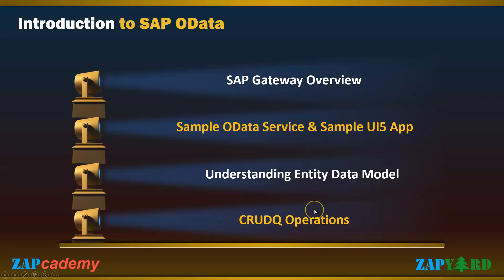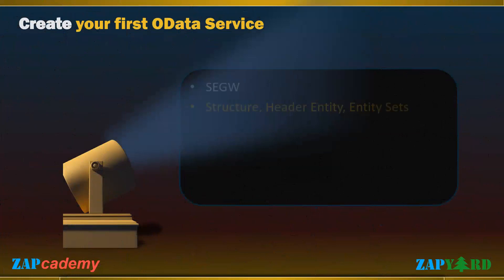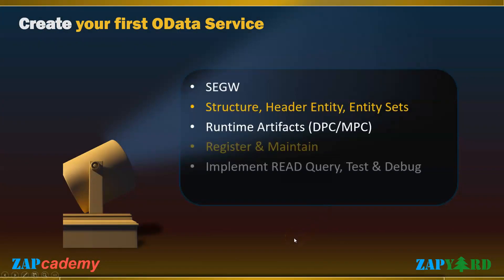We will understand the entity data model and see our CRUDQ operations. With good fundamentals in the previous session, we will go to transaction code SEGW and create our first OData project. We will create a structure along with the header entity and entity sets. We will generate runtime artifacts — the DPC and MPC classes. DPC stands for Data Provider Class and MPC stands for Model Provider Class. We will then register and maintain our first custom OData service.